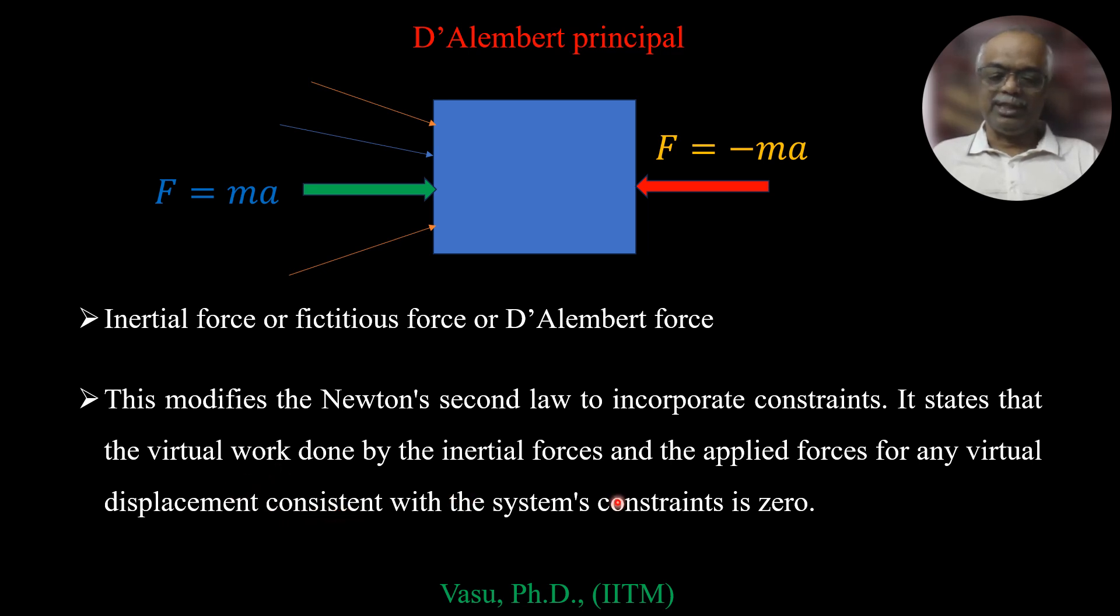It states that the virtual work done by the inertial forces and applied forces for any virtual displacement consistent with the system constraints is zero. That is this is applied force F equal to M·A. Then the virtual force is F equal to minus M·A. For any system if you add both you will get zero.